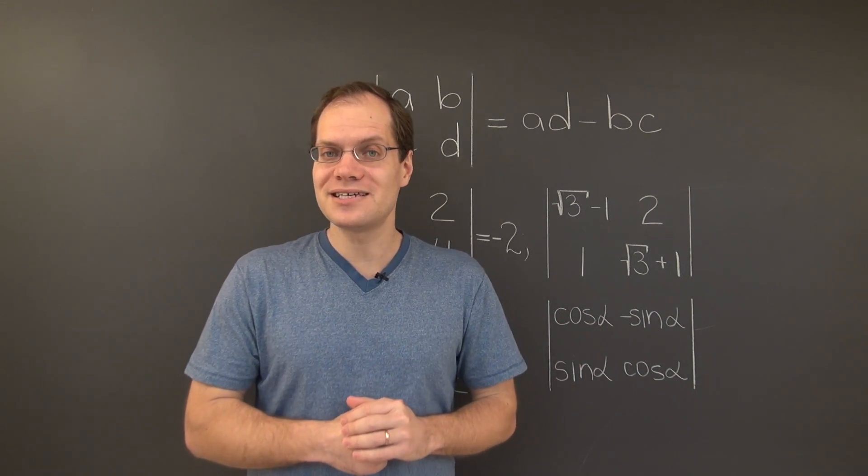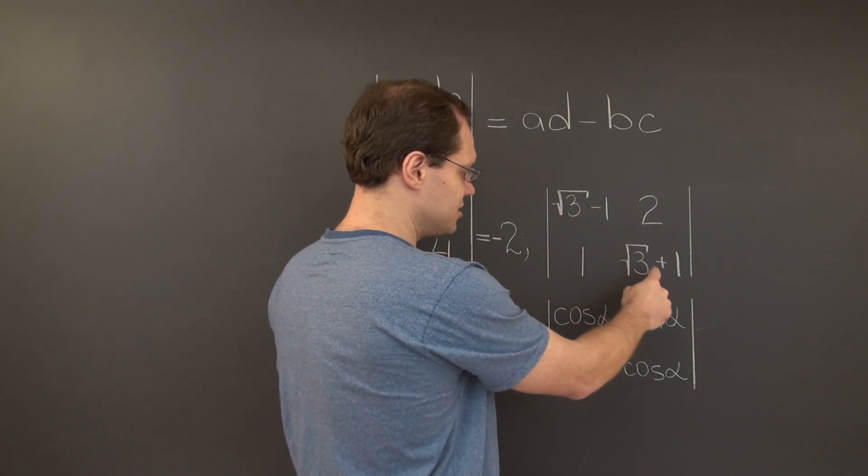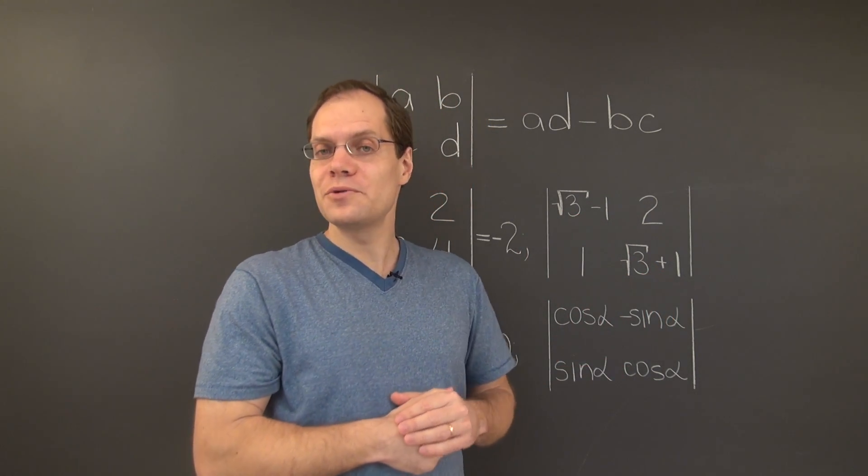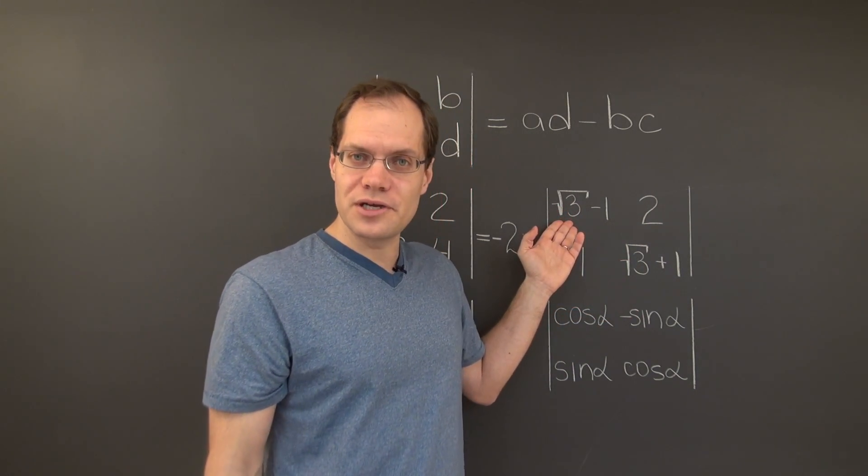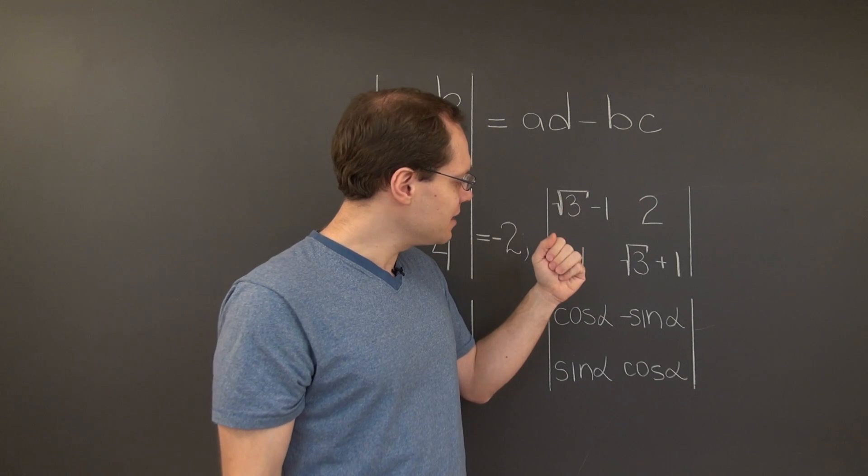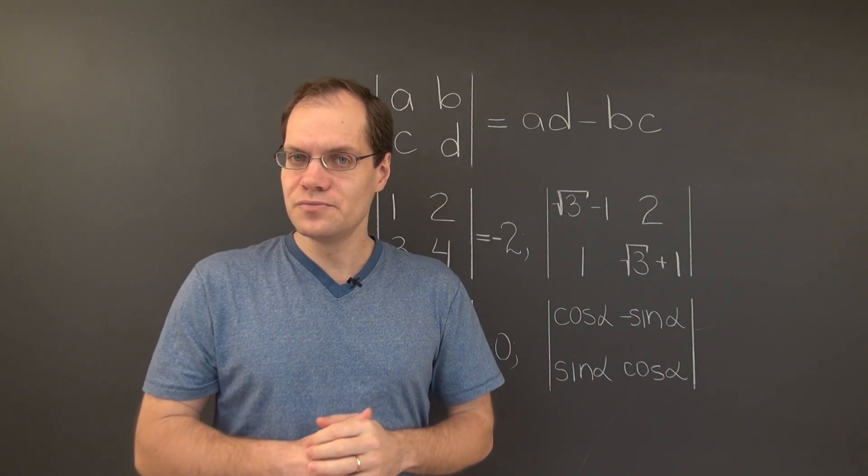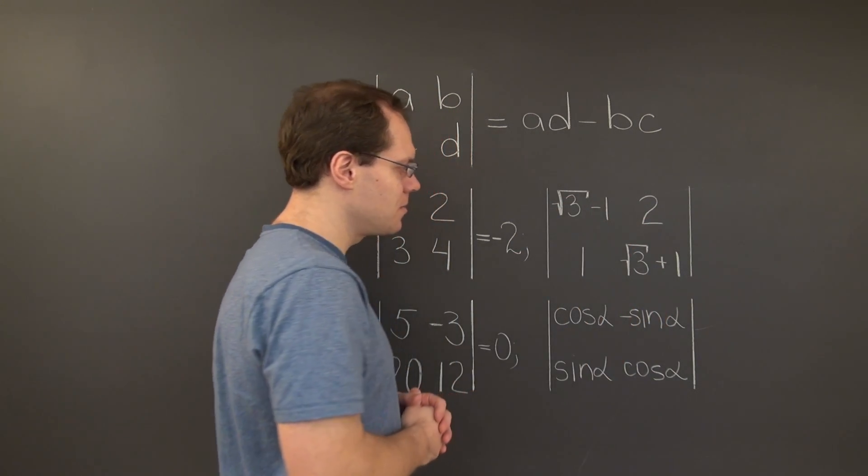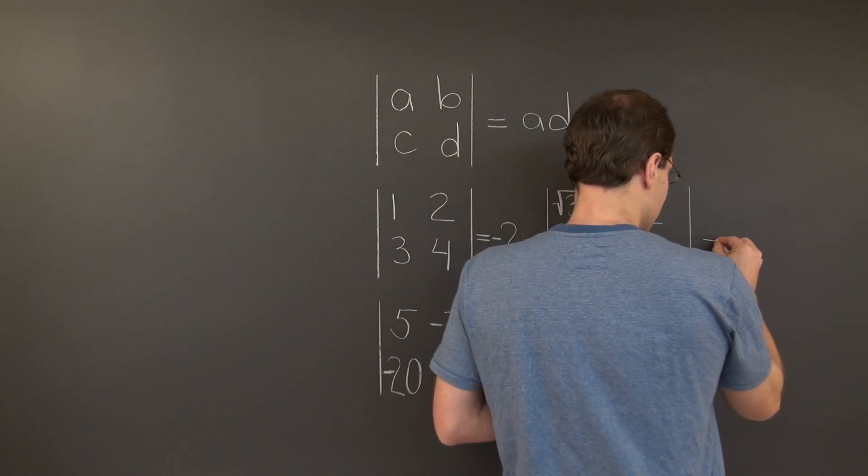Let's see what the determinant tells us. The determinant is this entry times this entry. By the well-known formula from algebra, the product of these two entries is square root of 3 squared minus 1 squared, which is 2. So this times this is 2 minus the product of these entries, minus 2. It's 2 minus 2, which is 0.